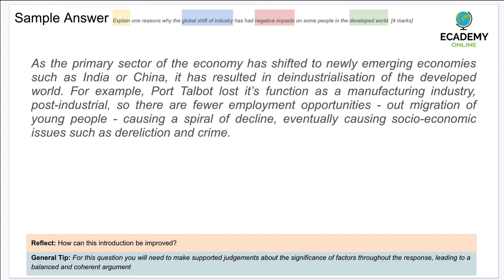This answer commands authority because the candidate refers to specific keywords throughout: primary sector, newly emerging economies, post-industrial, manufacturing industries, dereliction, spiral of decline, and socioeconomic issues. The candidate clearly communicates where de-industrialization is occurring, gives a specific example of where this has happened, and then provides multiple negative impacts on those specific places. This would be a really good structure and a really good answer if written in the exam.